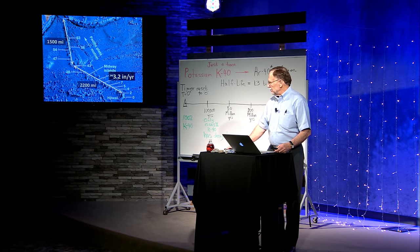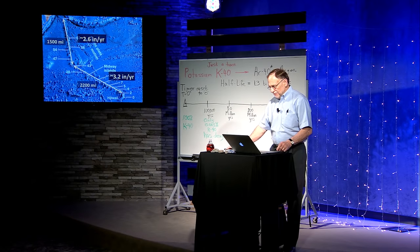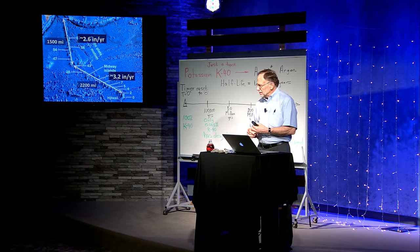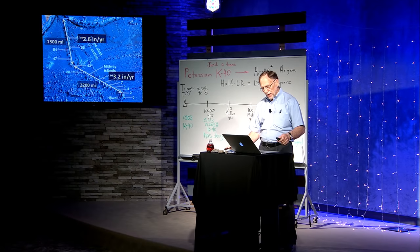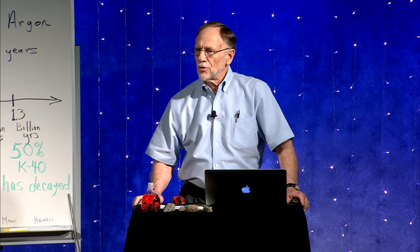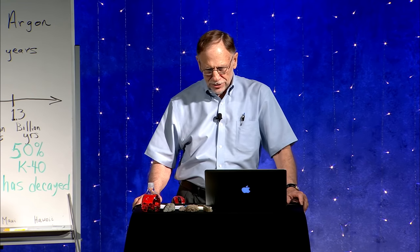Looking at the Emperor Seamount segment from there on up to the Aleutians, 1,500 miles. There, the average movement rate is a little bit less, about 2.6 inches per year. So we've got powerful data here to see about a process that's been going on in the Earth for about 80 million years.